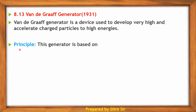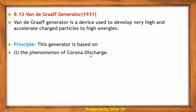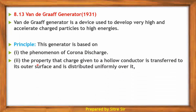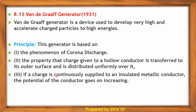The Van de Graaff generator is based on the phenomenon of corona discharge and the property that charge given to a hollow conductor is transferred to its outer surface and distributed uniformly over it. If charge is continuously supplied to an insulated metallic conductor, the potential of the conductor goes on increasing.